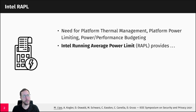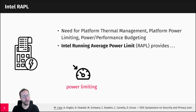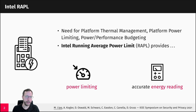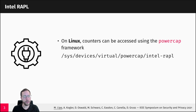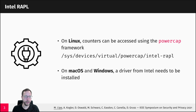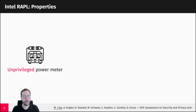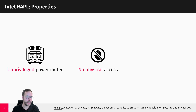With Intel Running Average Power Limit, or RAPL, such a way is provided, giving you the capability to limit power and also providing accurate energy readings to figure out how much energy your CPU has consumed. On Linux these counters can be accessed using the powercap framework from an unprivileged user. On macOS or Windows you first need to install a driver from Intel. So with Intel RAPL we basically have an unprivileged power meter inside our CPU without needing physical access.